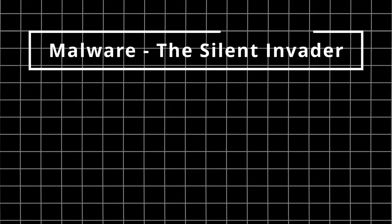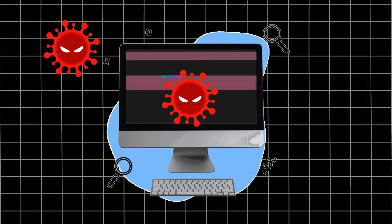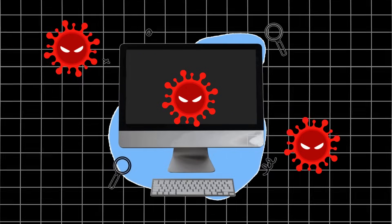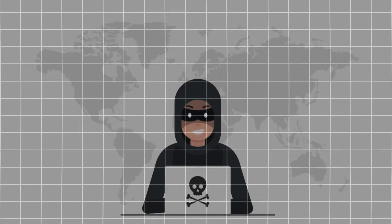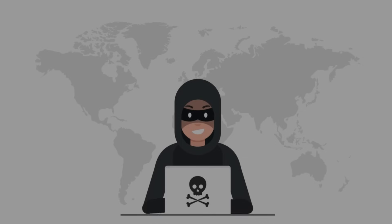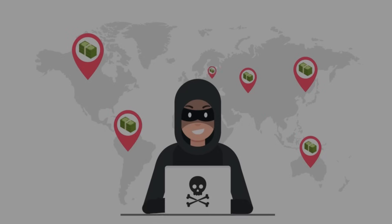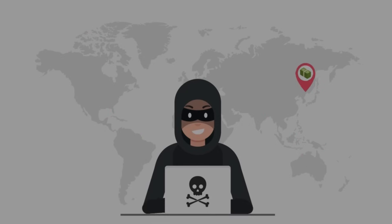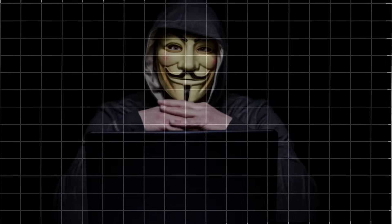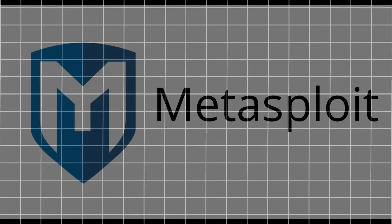Two: Malware — the silent invader. Malware is like a digital parasite. Once it infiltrates your system, it can wreak havoc in countless ways, from stealing data to taking control of your device. Remember the infamous WannaCry attack in 2017 — it spread ransomware across the globe, crippling businesses and demanding ransoms. Malware can arrive through an innocent-looking email or a compromised website, so always think twice before you click. Example tool: Metasploit.